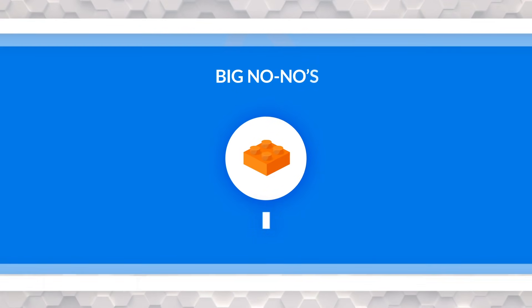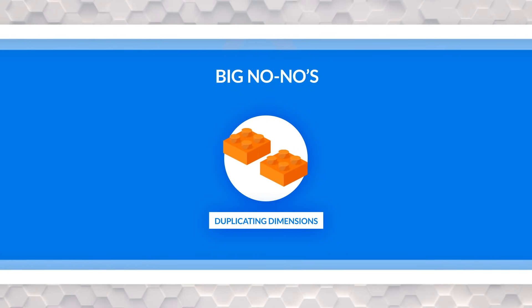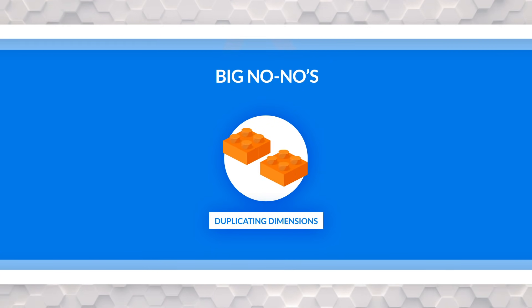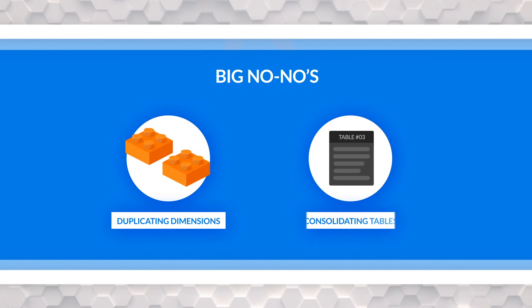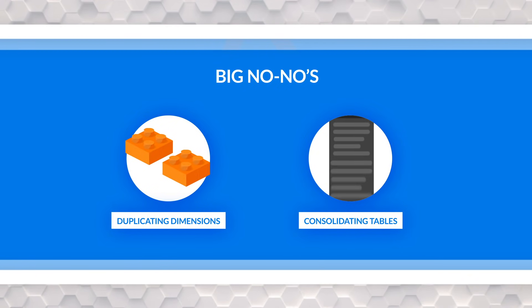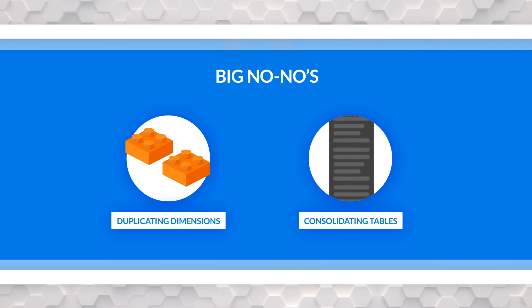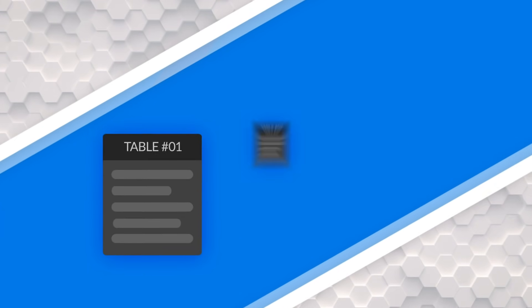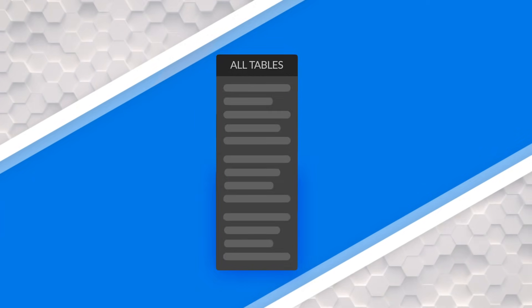So what do you do? People get really creative. Number one: don't duplicate your dimensions. The second thing people do is create what I like to call the consolidated fact table — they pretty much stack facts on top of each other. If you have internet sales and reseller sales, they'll create a view or use Power Query to append the two tables together.